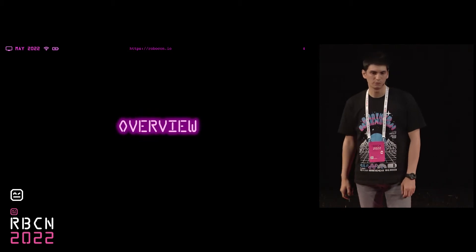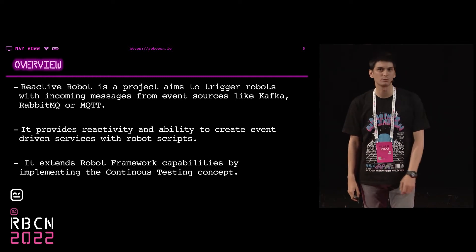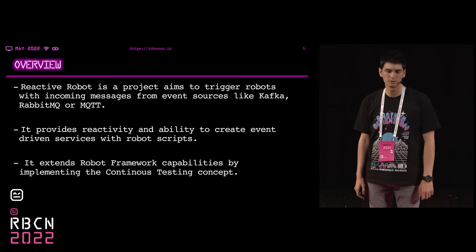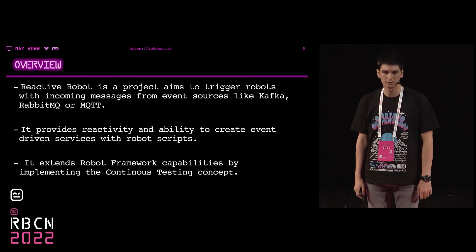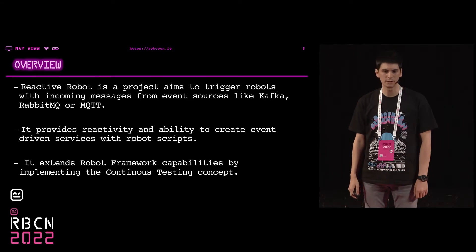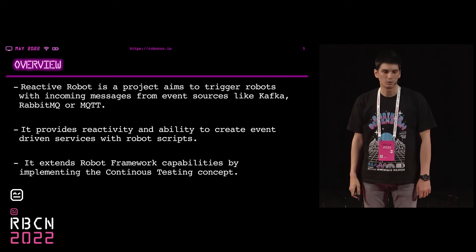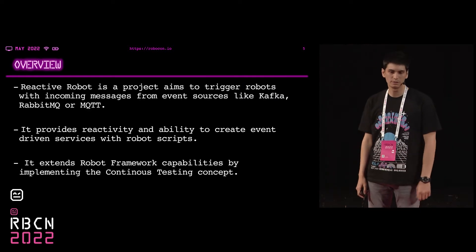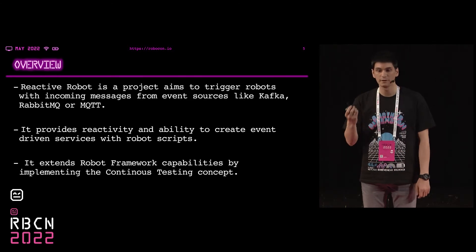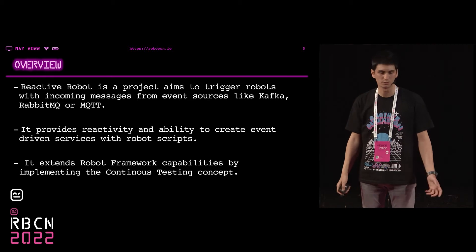The Reactive Robot project aims to trigger robots with incoming messages from event sources like Kafka, RabbitMQ, or MQTT — but it is not limited to them. It can be easily extended with custom implementations. It provides reactivity and the ability to create event-driven services with robot scripts, and it extends Robot Framework capabilities by implementing the continuous testing concept.